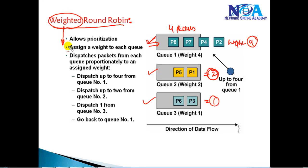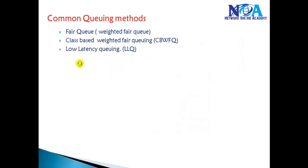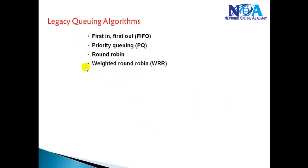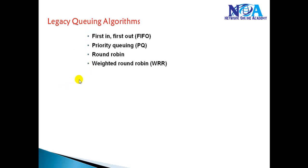These are the old legacy queuing methods used in earlier implementations, but we don't use them in today's networks. Today we use advanced queuing mechanisms like fair queuing, weighted fair queuing, and low latency queuing, which are far more advanced implementations. We'll talk about these commonly used new queuing mechanisms in detail in our next videos.